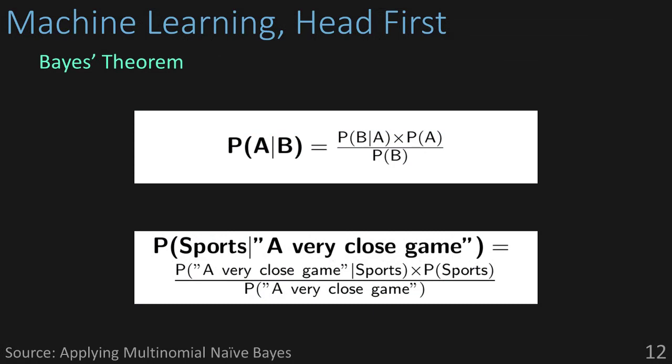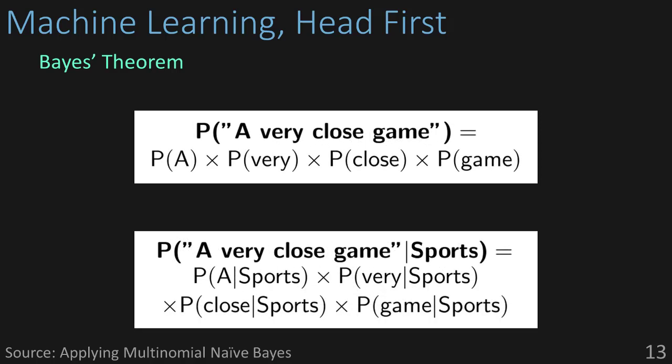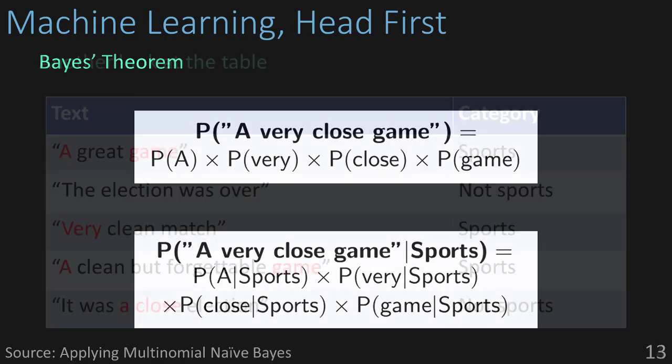Say we have the sentence: a very close game. What we want to know is what is the probability that this sentence is talking about sports given the words a very close game. To find the answer, we plug it into this formula and calculate the result. We'll do this for sports and not sports, and whichever has the highest end result is the winner. We already know the probability of sports and the probability of not sports — we had three statements for sports and two for not. These are called our priors, or prior probabilities. We can break down the sentence into each of its individual words — a, very, close, and game — and apply their probabilities given sports independently.